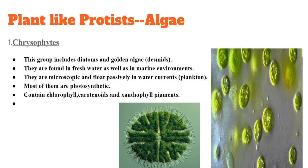The first example of plant-like protists is chrysophytes, which include diatoms and golden algae. Golden algae are called desmids. Their habitat is found in water, either freshwater or marine environments. They are all microscopic and they float passively on water currents, so they are called phytoplanktons — they look like plants floating on the surface of the water.